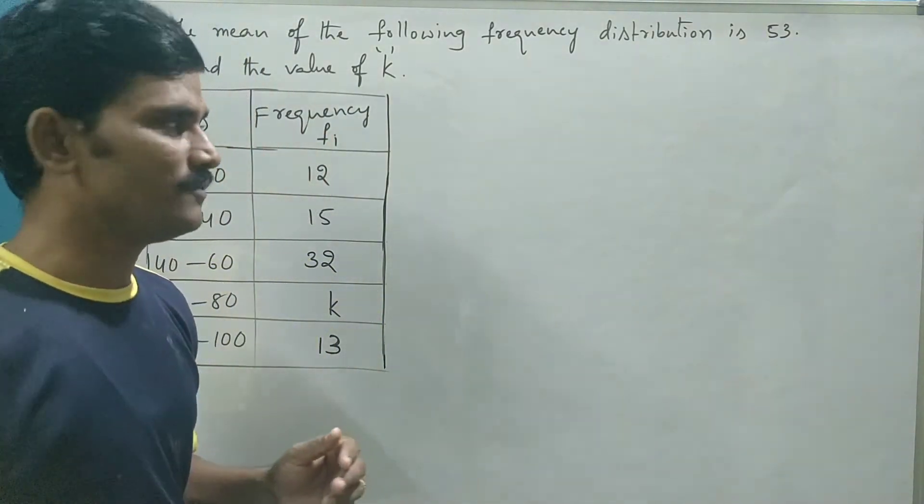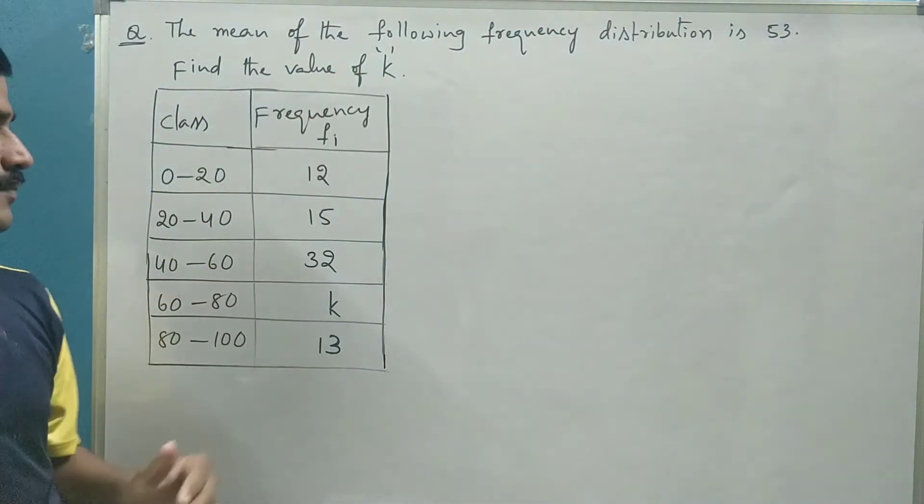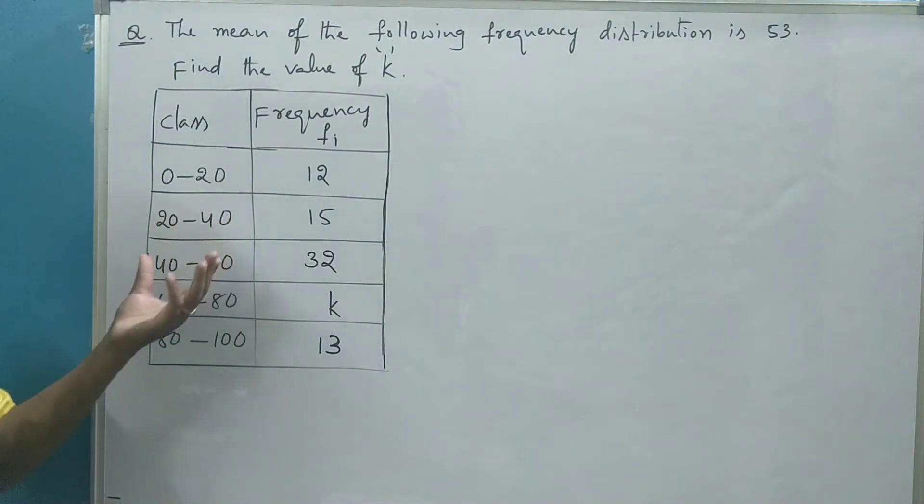Let us see the question first. The mean of the following frequency distribution is 53. Find the value of K. And class intervals are given as 0 to 20, 20 to 40 and so on. And corresponding frequencies are 12, 15, 32.